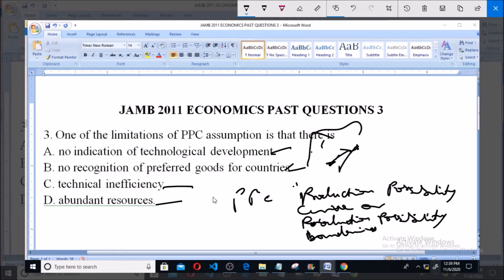It refers to a graph or curve showing the possible combinations of different commodities that can be produced in a given economy, given the prevailing level of technology, if all the available productive resources are efficiently utilized.